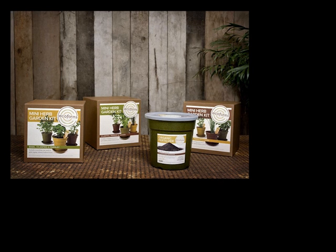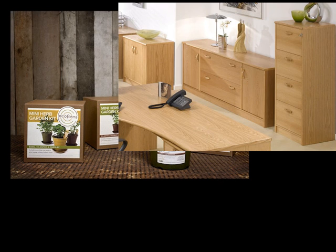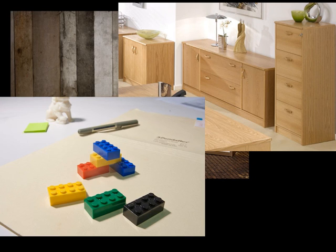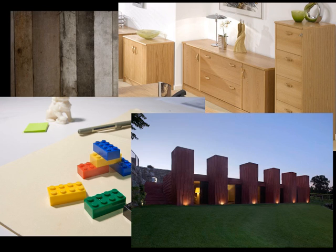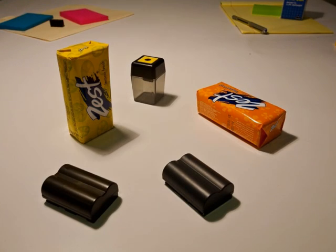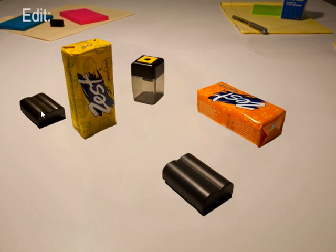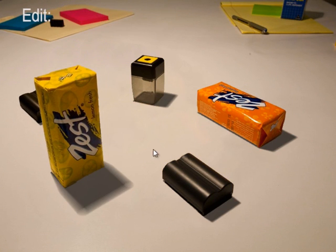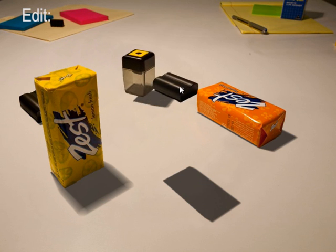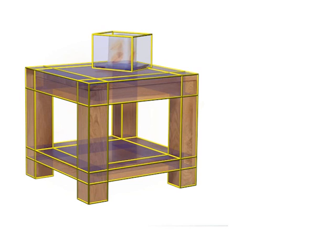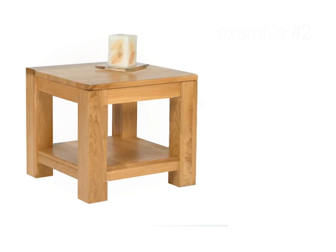We introduce interactive images in the context of man-made environments wherein objects are simple, regular, and share various non-local relations like coplanarity, repetitions, etc. Our interactive framework creates a cuboid-based partial scene model of a single image using minimal user interaction and subsequently allows simple and intuitive image manipulations directly on the image.